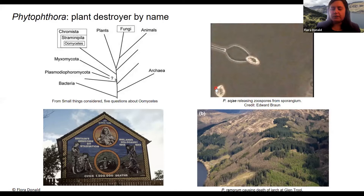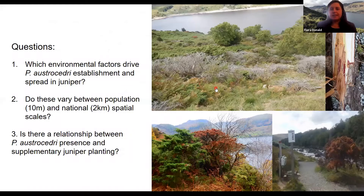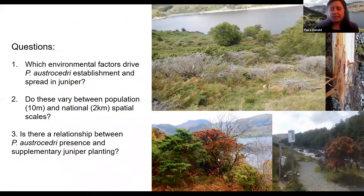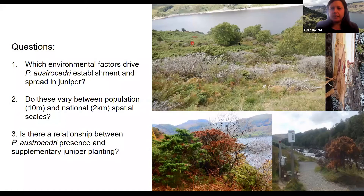Unlike Phytophthora ramorum, we don't think that Phytophthora austrasidri can be wind dispersed at all. This slide gives you an idea of the impact that Phytophthora austrasidri causes when infecting juniper. We start with a healthy juniper, then the foliage discolours and goes quite yellow, and unfortunately the tree dies and goes a very characteristic bronze colour. The needles drop off and you're left with skeletal juniper. You can see that Phytophthora austrasidri can cause significant juniper mortality — this is a population in Haweswater in the Lake District. The zoospores infect the juniper roots and the infection moves up into the phloem, girdling it so the tree can't take up any nutrients, which is why whole stems or whole trees die very suddenly.